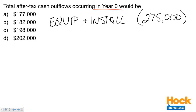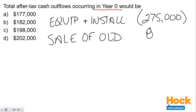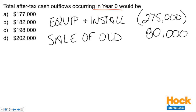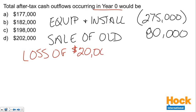The second cash flow in year zero is the sale of the old equipment, which was going to be sold immediately. That sale gives us an $80,000 cash inflow. But we need to remember that asset had a $100,000 tax basis, and we sold it for $80,000, which means we had a loss of $20,000. That's tax deductible — a reduction of our taxable income — so we're going to save on income taxes: 40% of $20,000 gives us another $8,000 cash inflow.